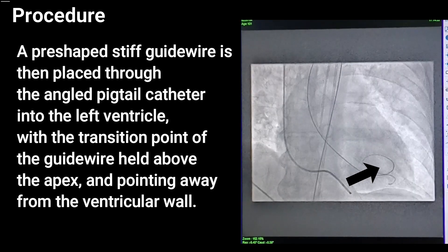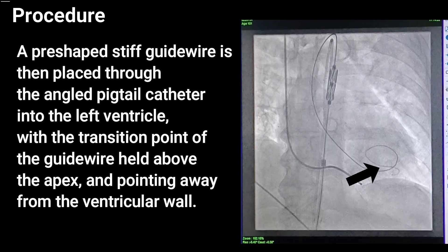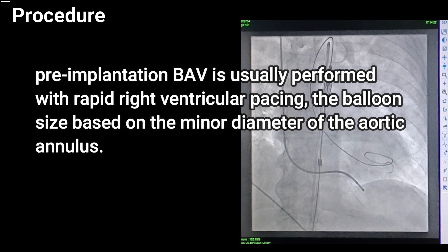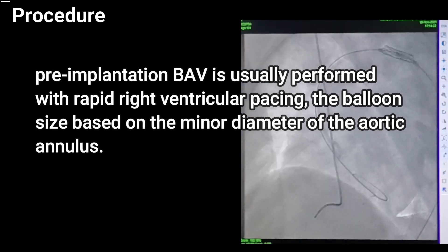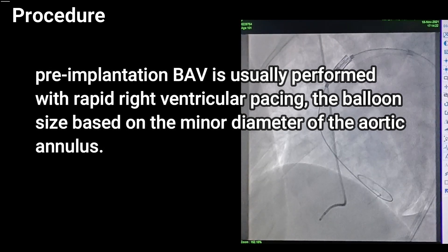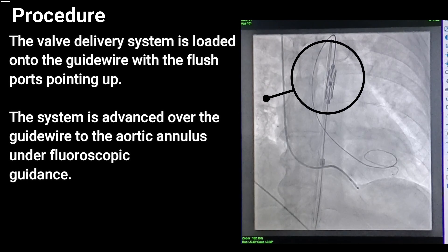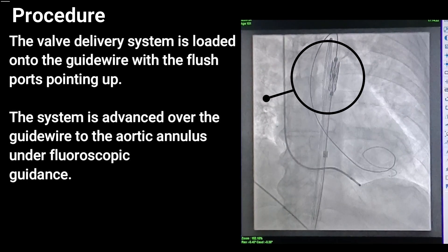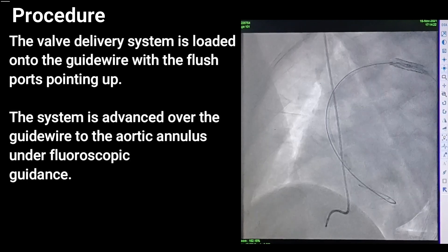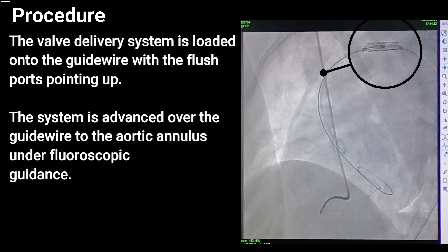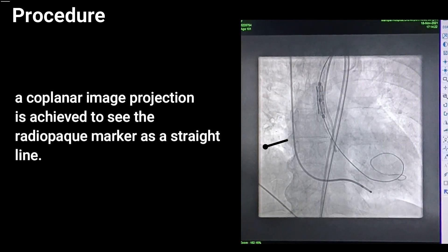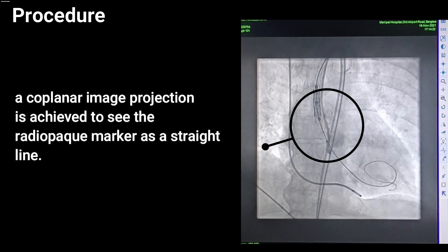A pre-shaped stiff guide wire is placed through the angled pigtail catheter into the left ventricle, with the transition point held above the apex and pointing away from the ventricular wall. Pre-implantation balloon aortic valvuloplasty is usually performed with rapid right ventricular pacing. The balloon size is based on the minor diameter of the aortic annulus, and the valve delivery system is loaded onto the guide wire with flush ports pointing up, then advanced to the aortic annulus under fluoroscopic guidance.